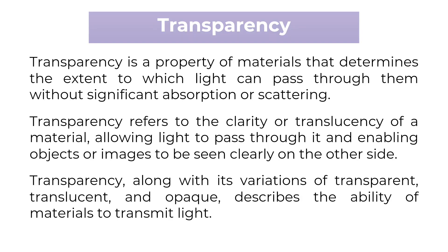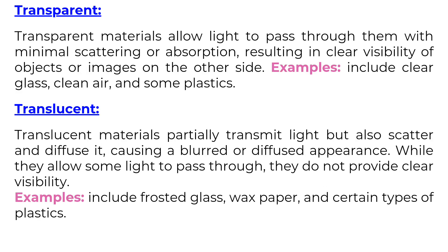Transparency is a property of materials that determines the extent to which light can pass through them without significant absorption or scattering. Transparent materials allow light to pass through with minimal scattering, resulting in clear visibility — examples include clear glass, clean air, and some plastics. Translucent materials partially transmit light but scatter and diffuse it, causing a blurred appearance — examples include frosted glass, wax paper, and certain types of plastics.